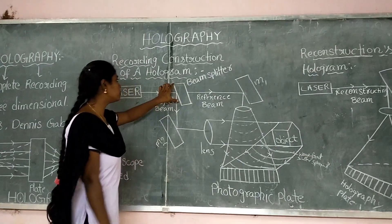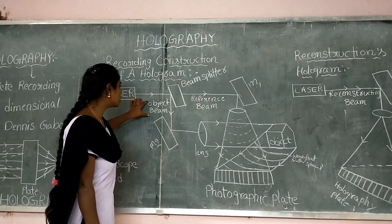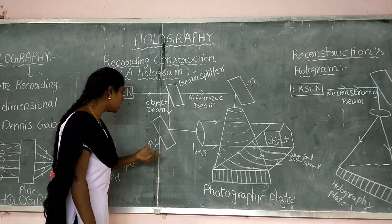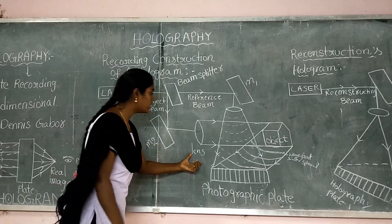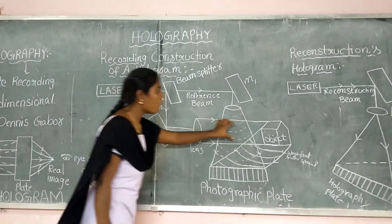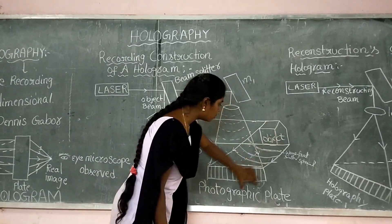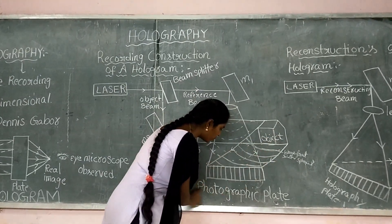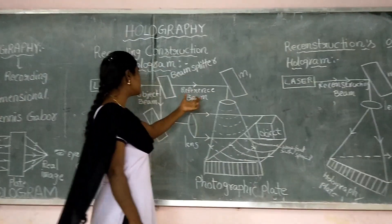First, we have two beam splitters. The first is the object view. The object view hits the photographic plate.